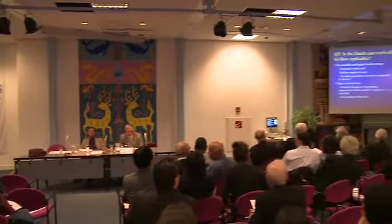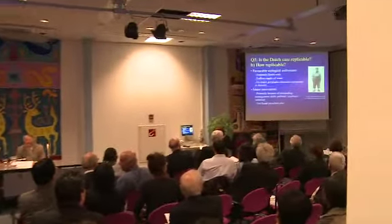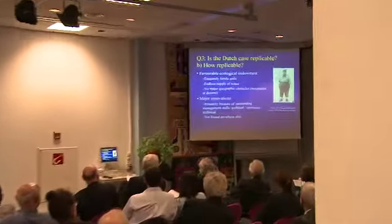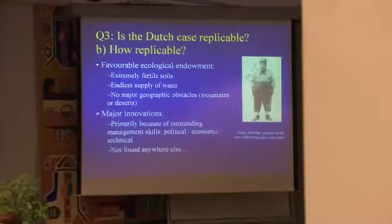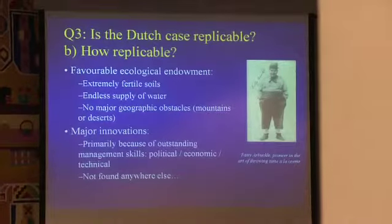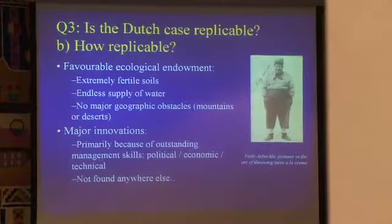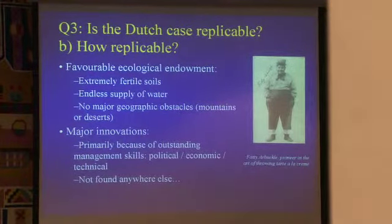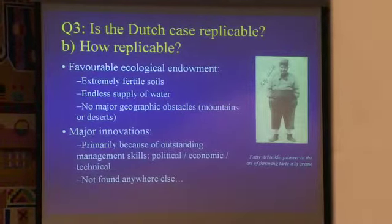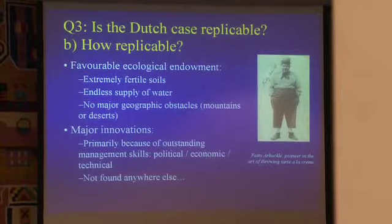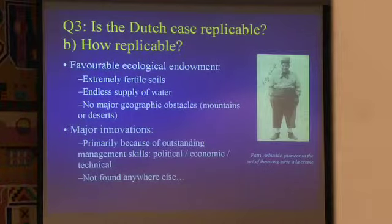It was an outstanding ecological environment, very different from the world average. A very fertile soil and a supply of water. No major geographical obstacles, no mountain, no desert. So the only problem of the Dutch was to control the water flows, which they did with good success.